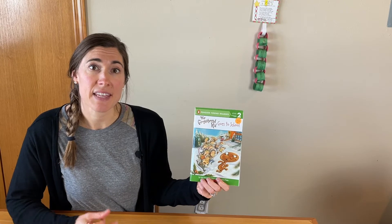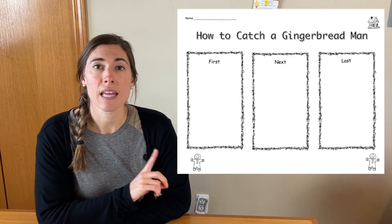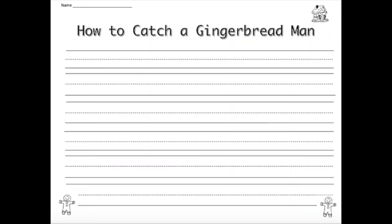Moving on to writing activities: you can use the same gingerbread story you read, or read a different version for the writing activity. Here's an idea — you can do a first, next, last thinking map or graphic organizer to help organize your students' thinking, kind of as brainstorming. They think about what happened first, what happened next, what happened last. If you want to do something a little different, you could have them write a story about how to catch a gingerbread man — they create it themselves. Then they use that chart to write sentences and make a story out of it.